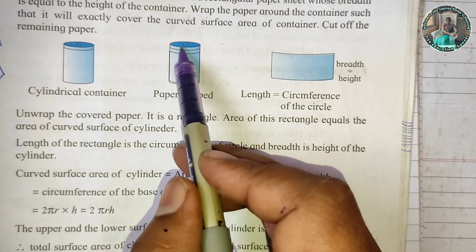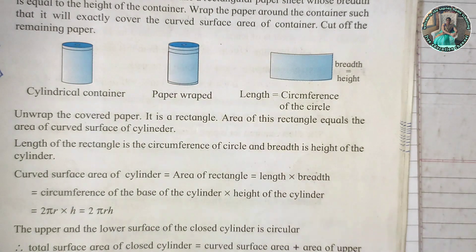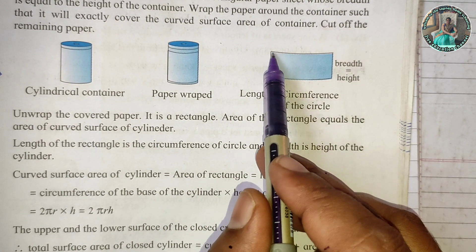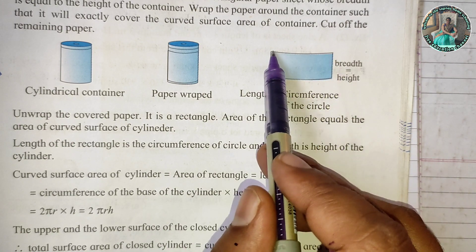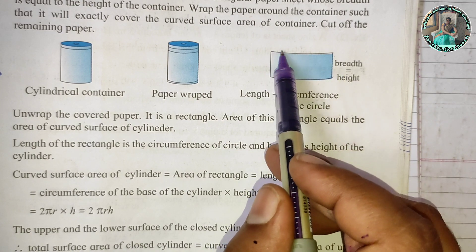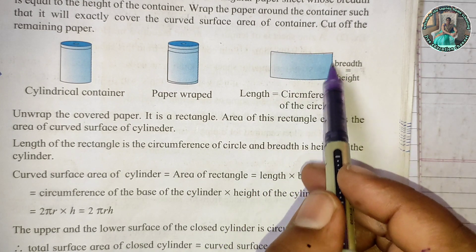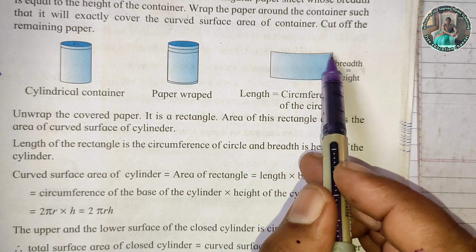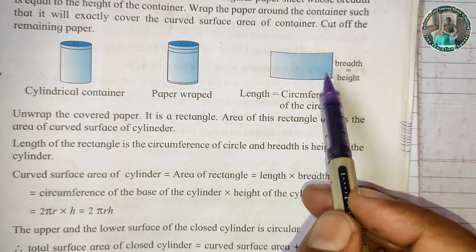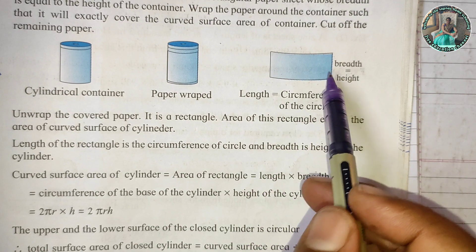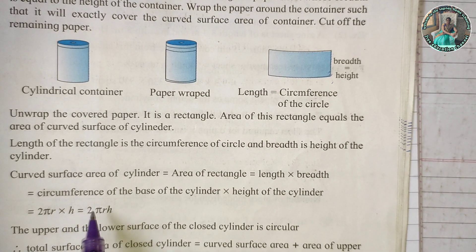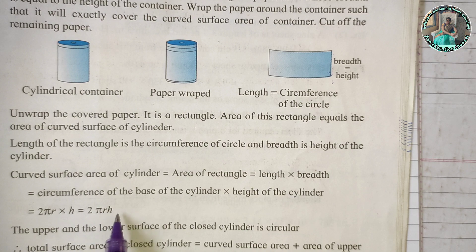If you know the radius, you can find the circumference as 2πr. So 2πr is the length and h is the height. The rectangle area formula is length × height, which gives us 2πr × h. So the curved surface area formula is 2πrh.